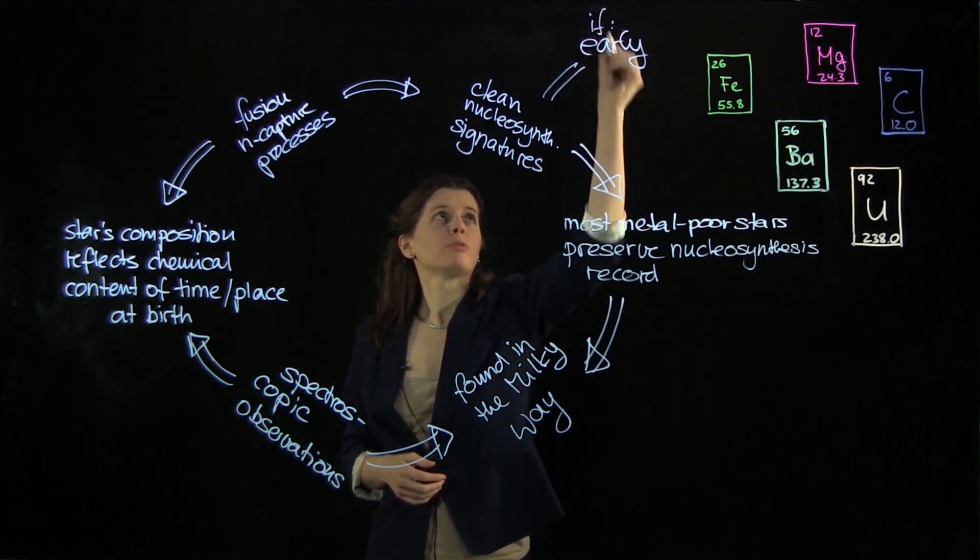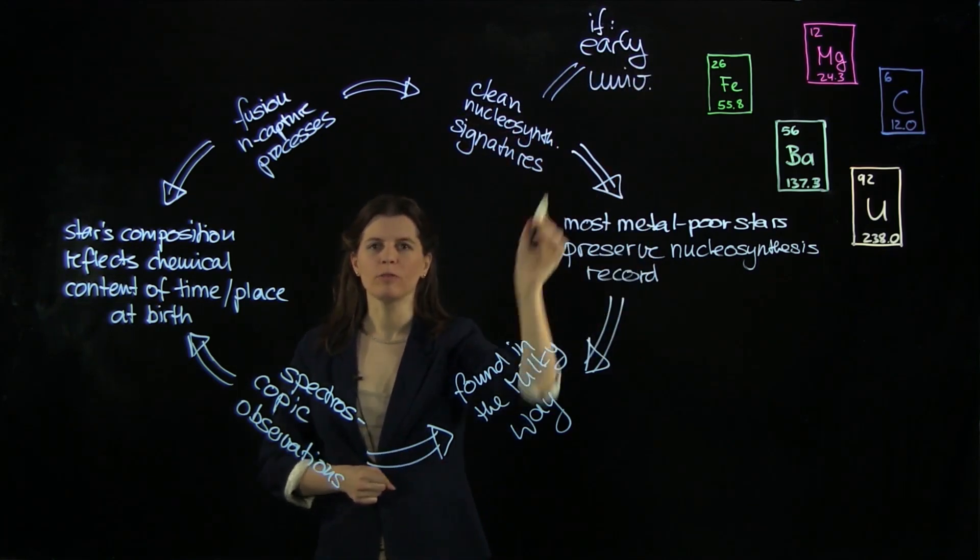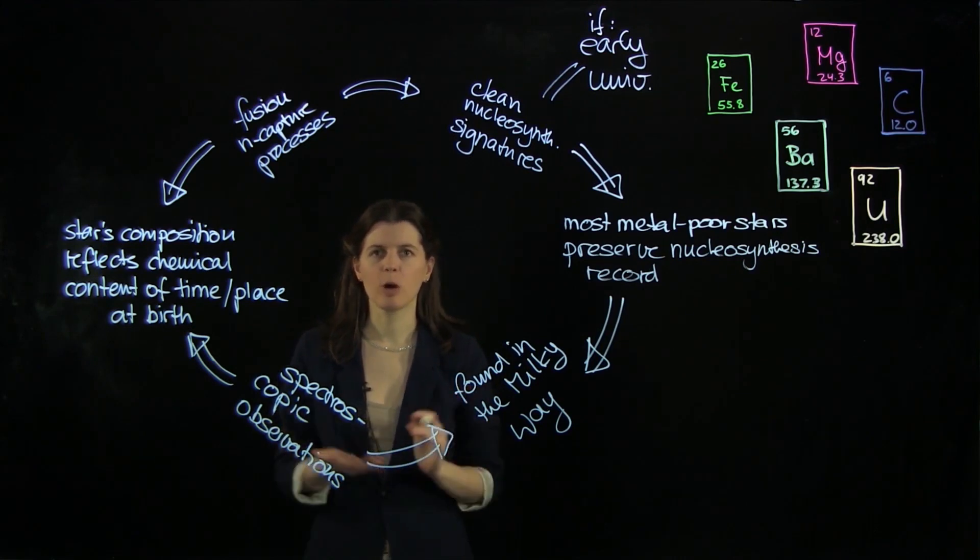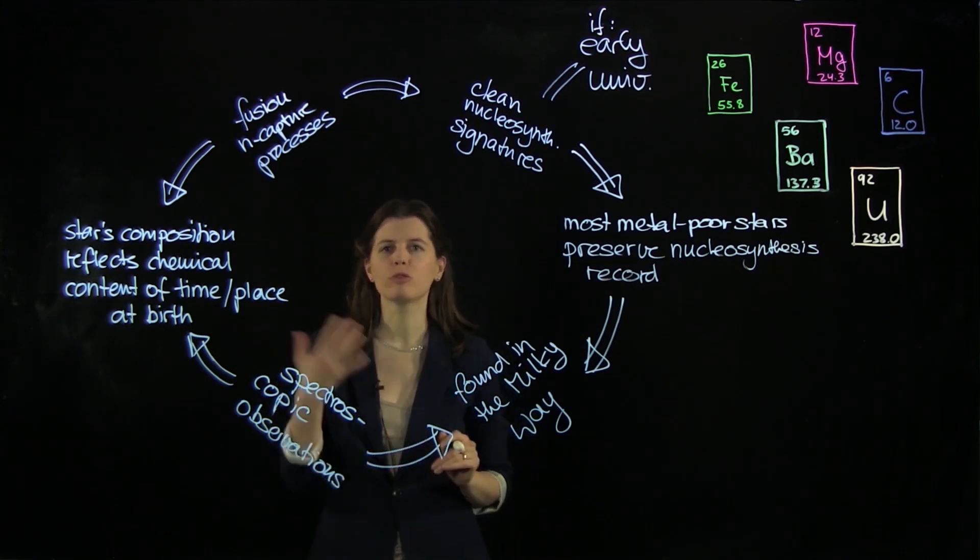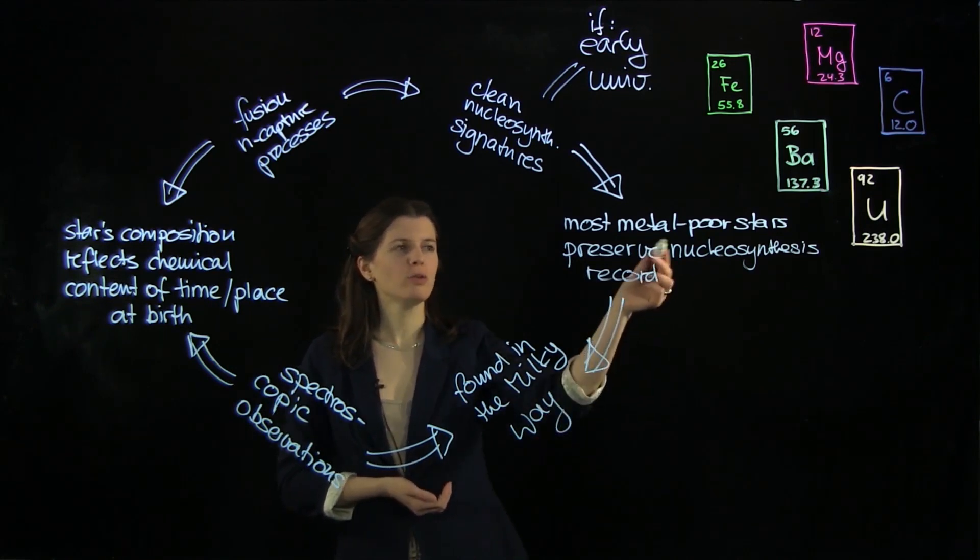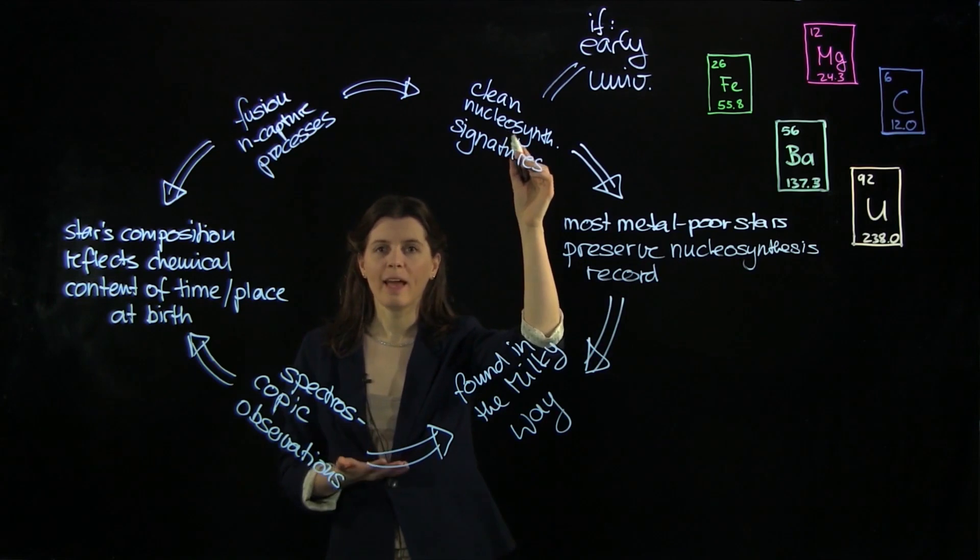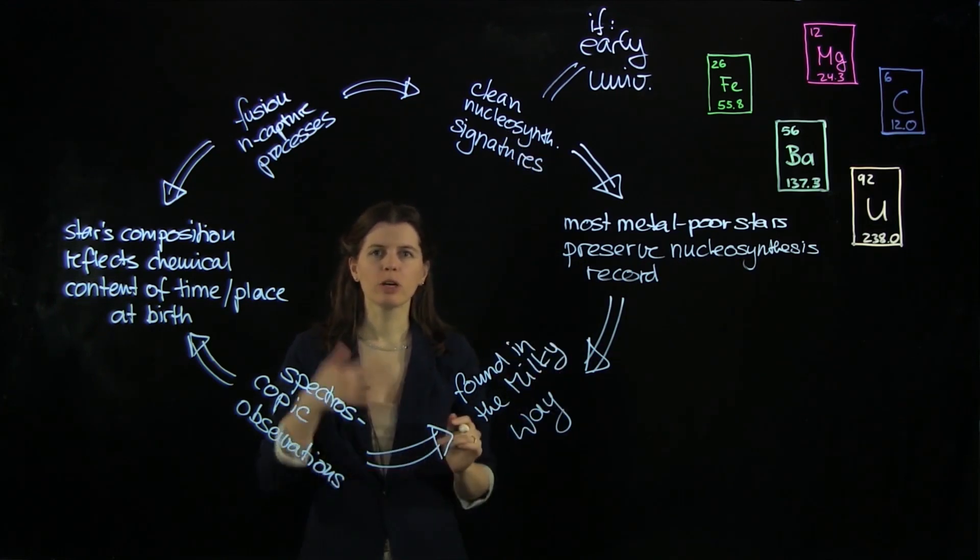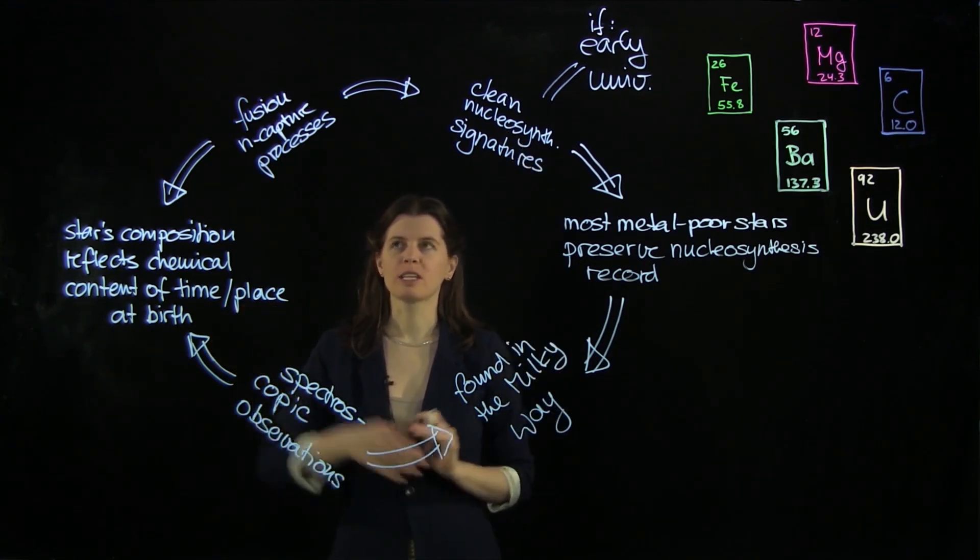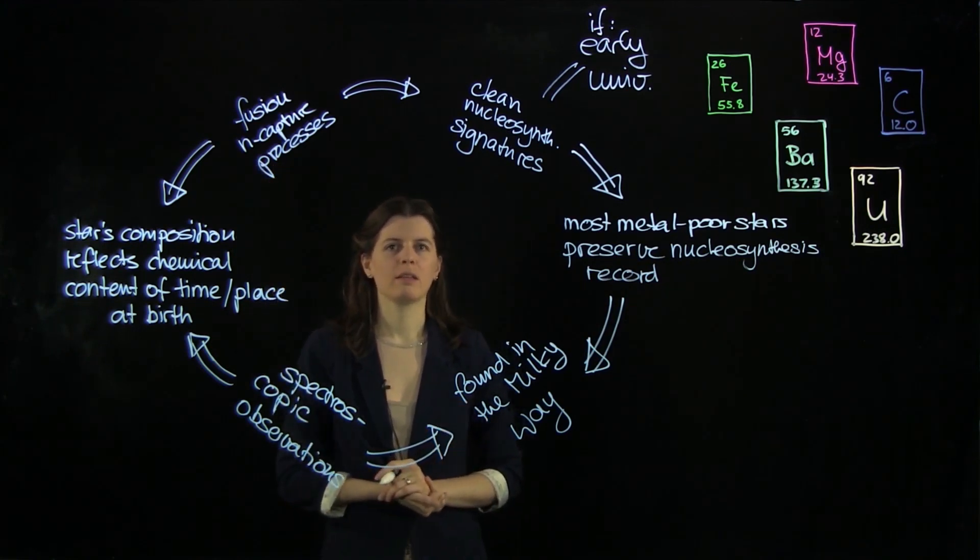So if produced in the early universe, then we have this chance of observing clean signatures. Today that is not possible anymore because chemical evolution has moved on too far. It's too messy today. And so we use the most metal poor stars in order to detect these clean signatures and to work with nuclear physicists to understand how these processes exactly work and in what astrophysical sites they might occur.